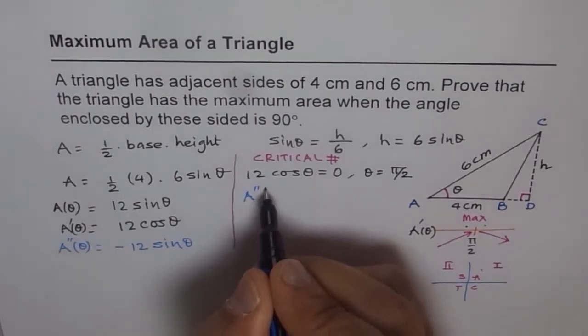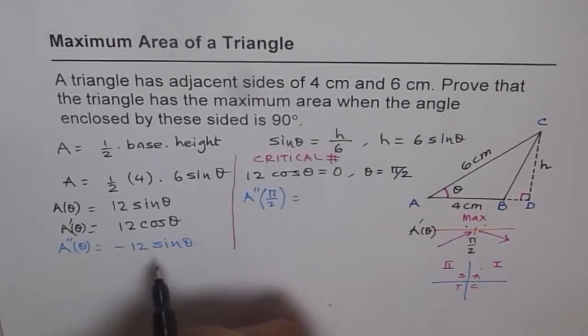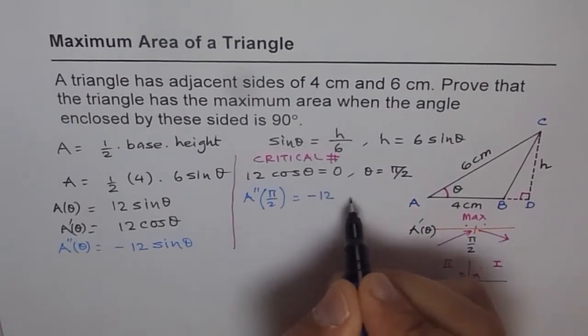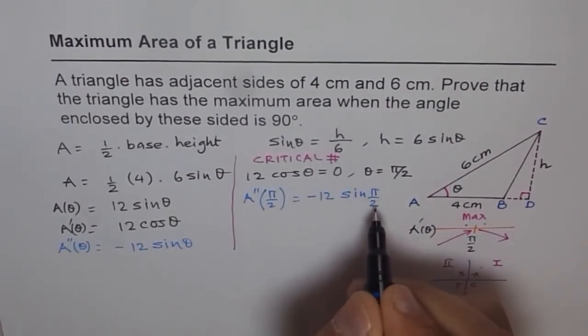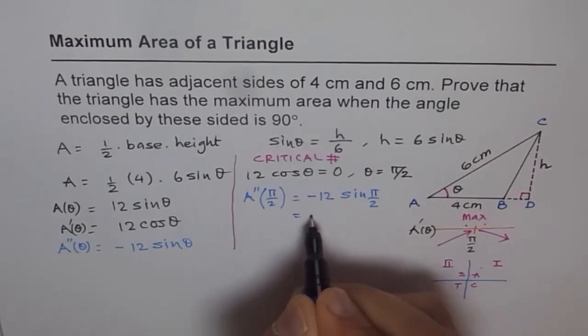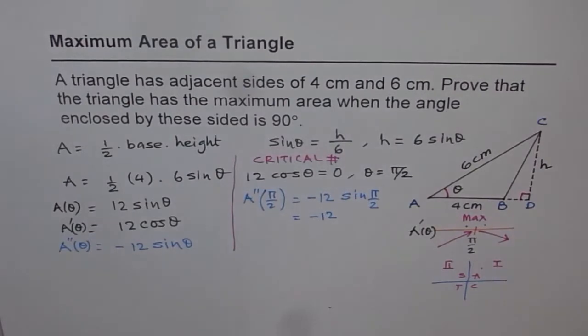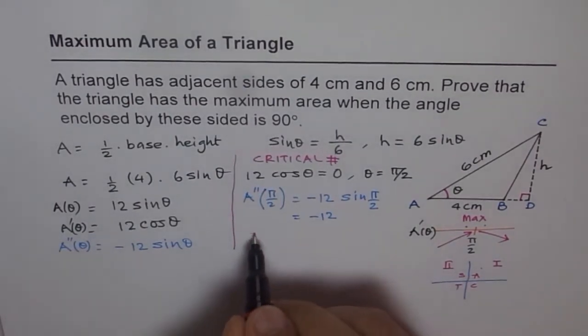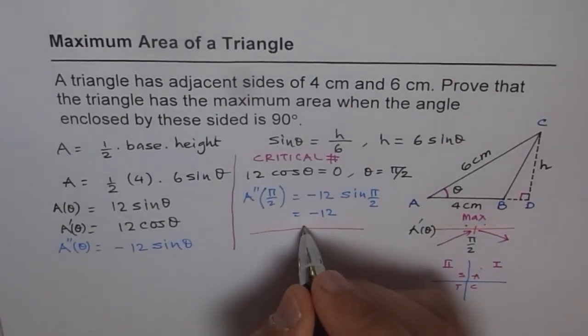So at pi by 2 it is going to be minus 12 sin of pi by 2. Sin of pi by 2 is plus 1 and so we get a negative value. Now from the second derivative test if you get a negative value at the point of interest, our point of interest was pi by 2.